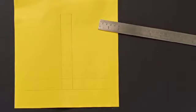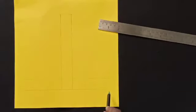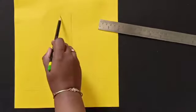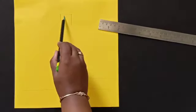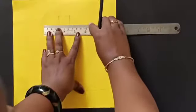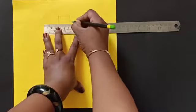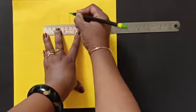Now you have to make two standing lines and two sleeping lines like this. And you have to close the standing line from above by making a line. Now after leaving some space from above, we will put a dash here.